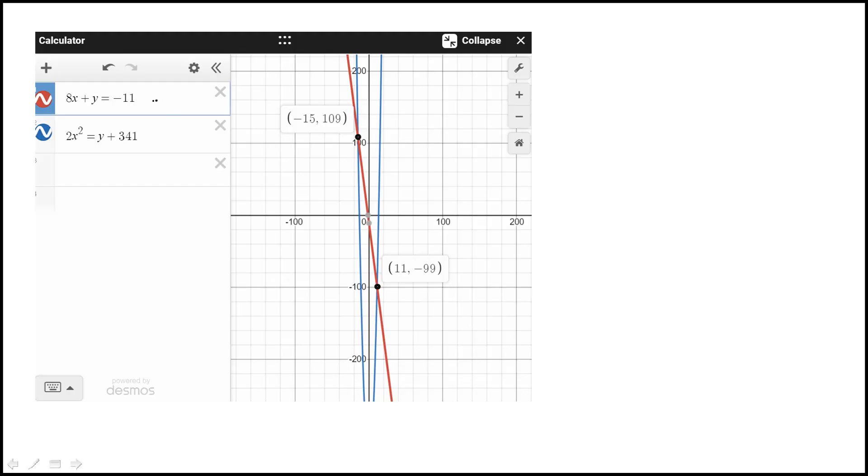In this question we are given this system of equations. The first one is linear, the second is quadratic in X. They're asking what is the possible value of X if they intersect at this ordered pair (X, Y).